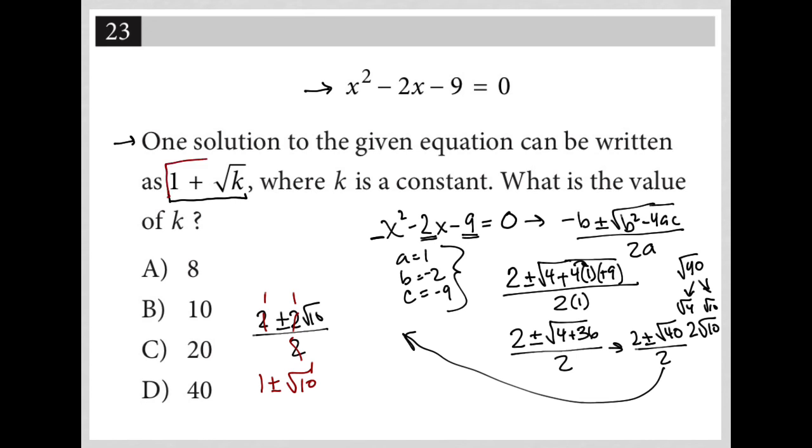The question says that one of our solutions is 1 + √k, which means we could have 1 + √10 or 1 - √10. Our k value is the number under the radical, which is 10, and therefore our correct answer is choice B.